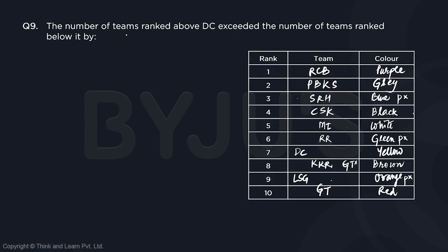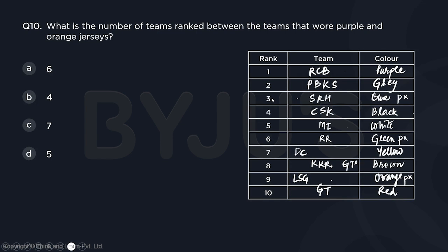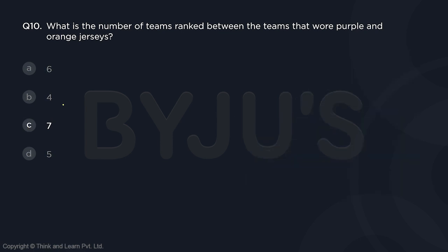Question nine: the number of teams ranked above DC minus those ranked below DC. DC is at rank seven, so six teams are above and three are below — the difference is three. TITA answer: 3. Question ten: the number of teams ranked between the teams that wore purple and orange jerseys. Purple is rank one and orange is rank nine, so the teams between them are ranks two through eight — that is seven teams. Answer is option C.